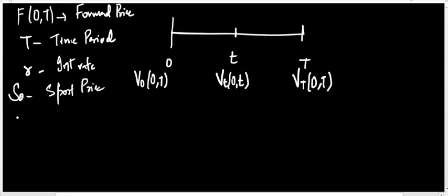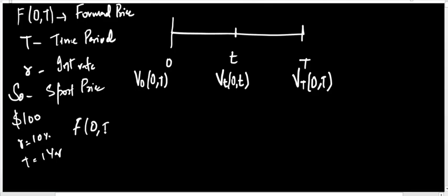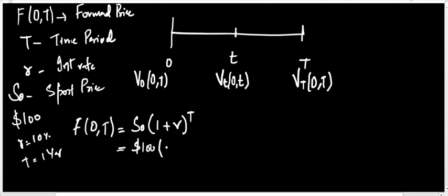Now let me consider a simple case. We have a commodity that is worth $100, the interest rate is 10%, and the time to maturity is 1 year. The forward price is simply the spot price multiplied by (1 + r) raised to the power t. So: $100 × (1 + 0.1)^1. Therefore the forward price is $110.